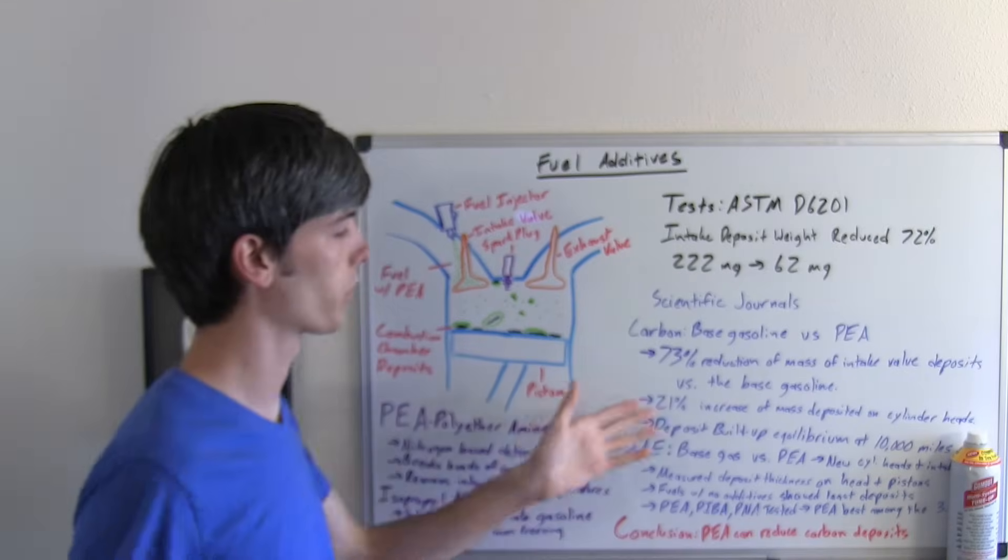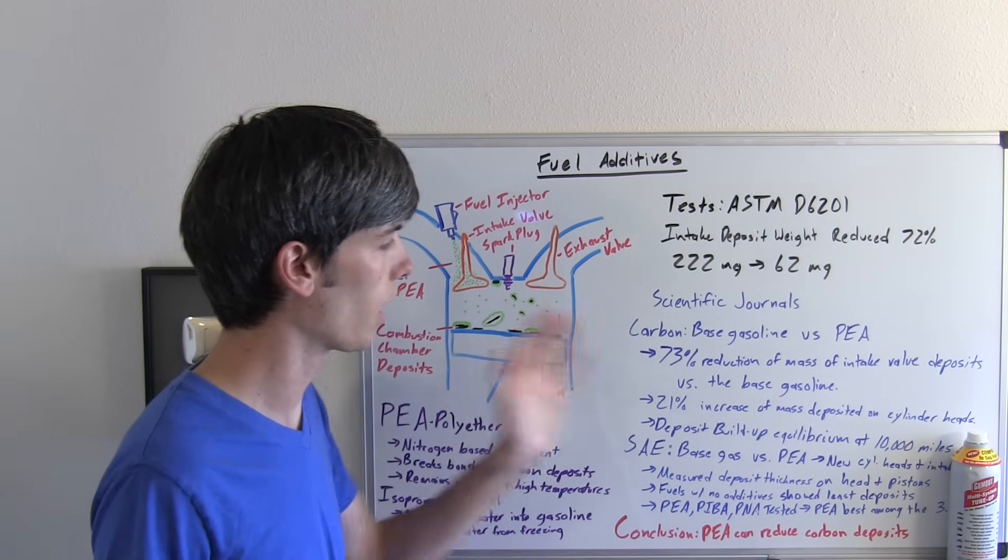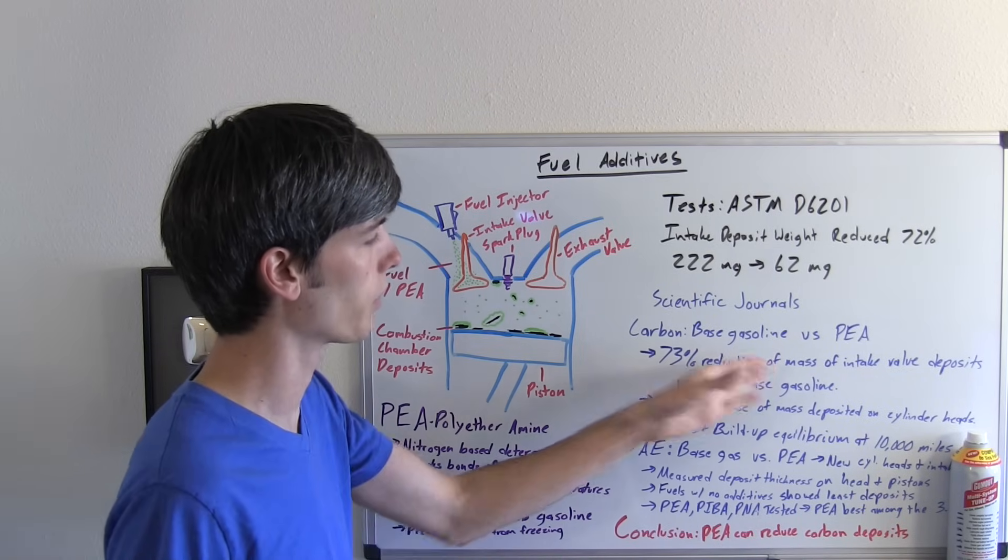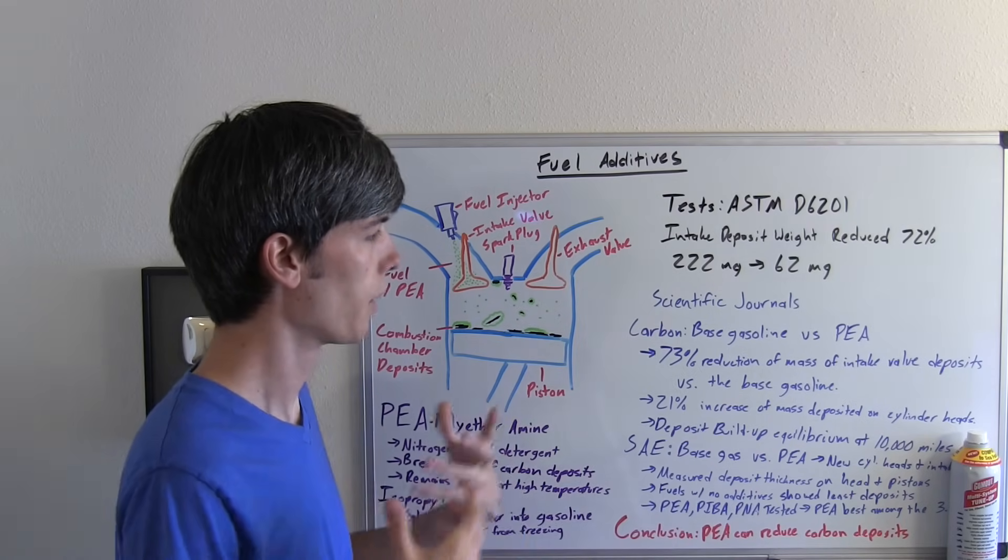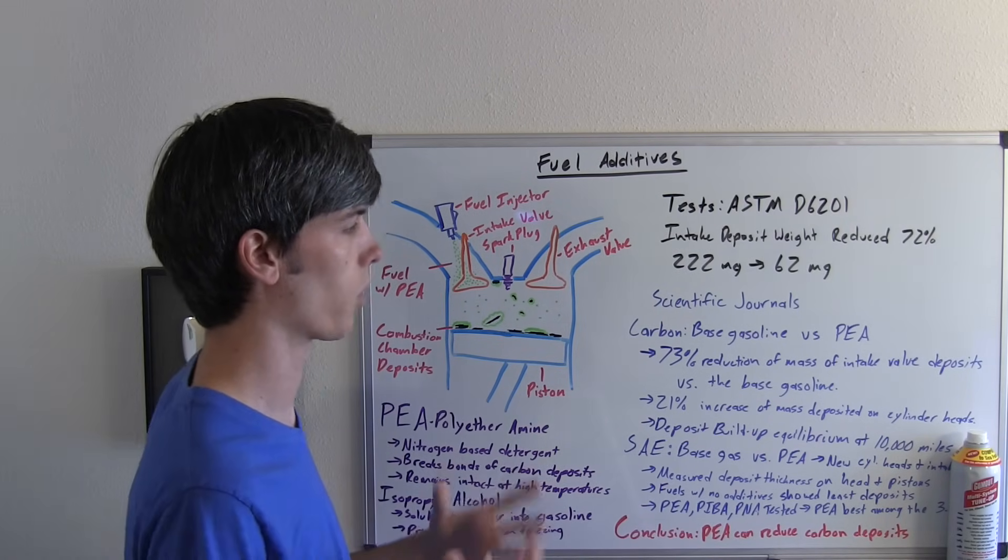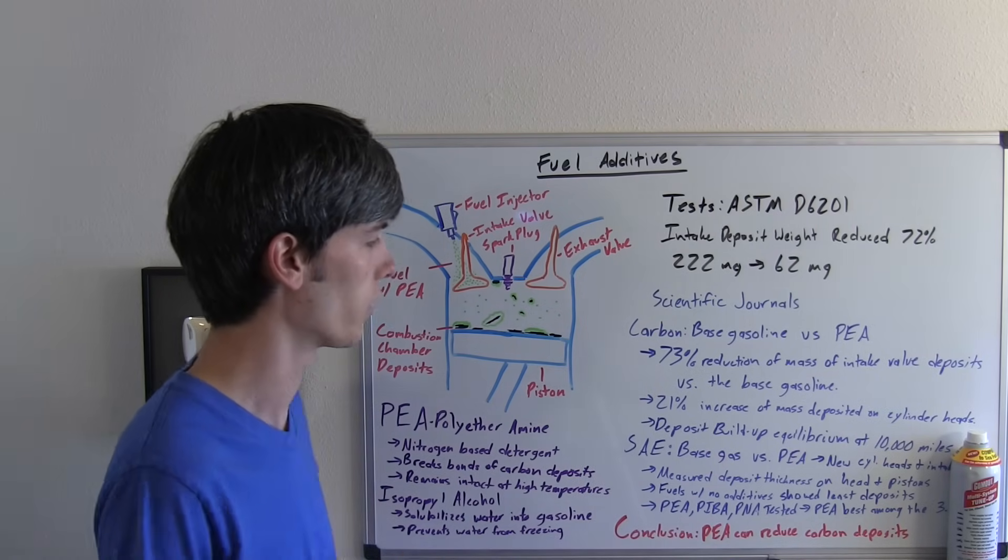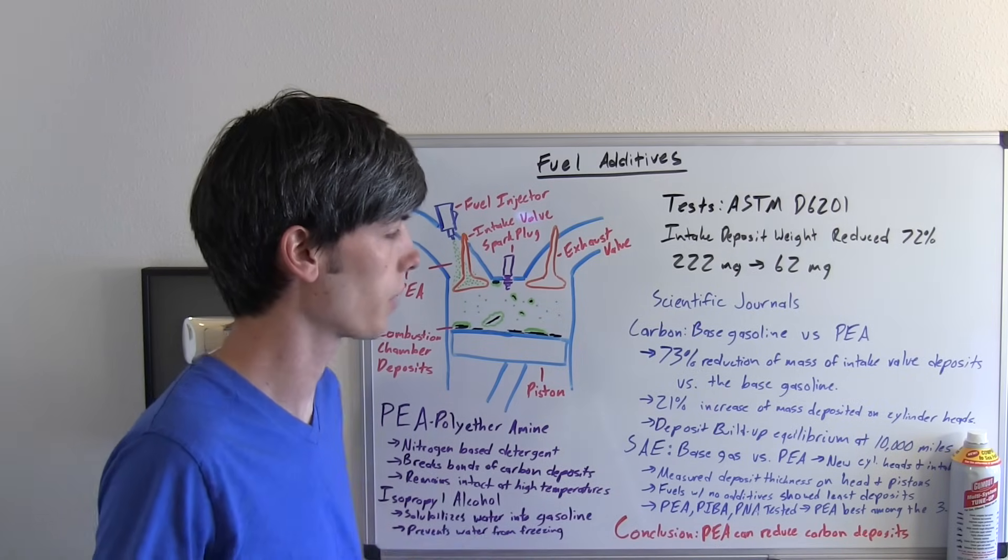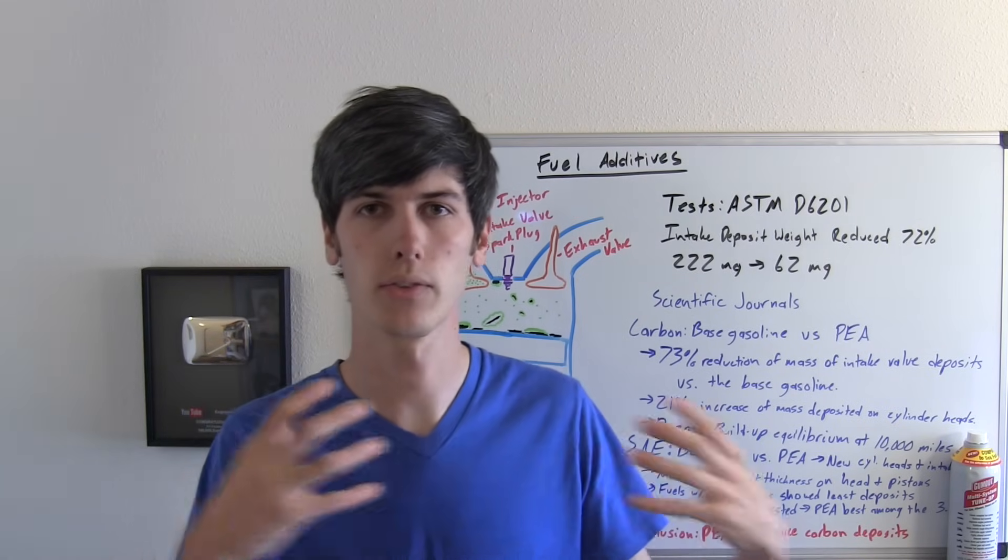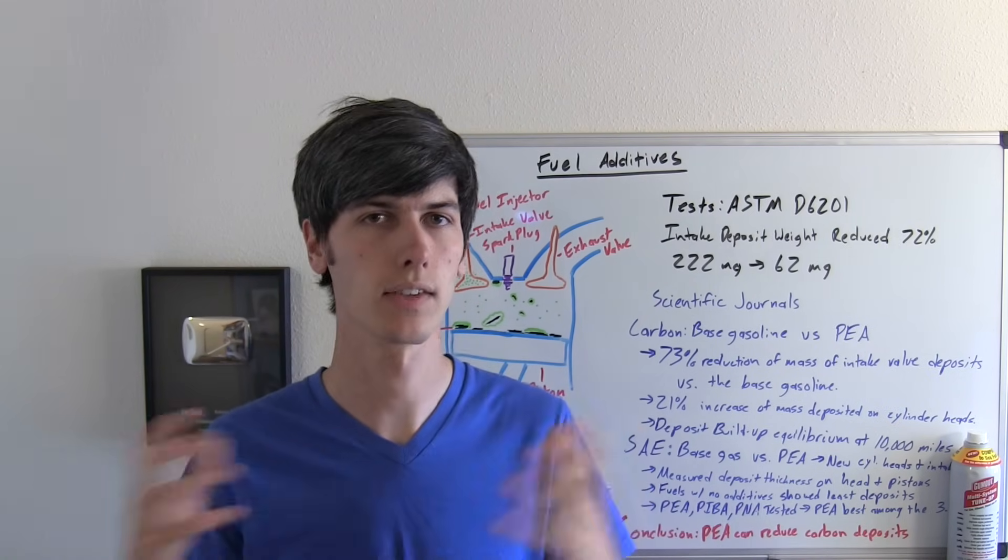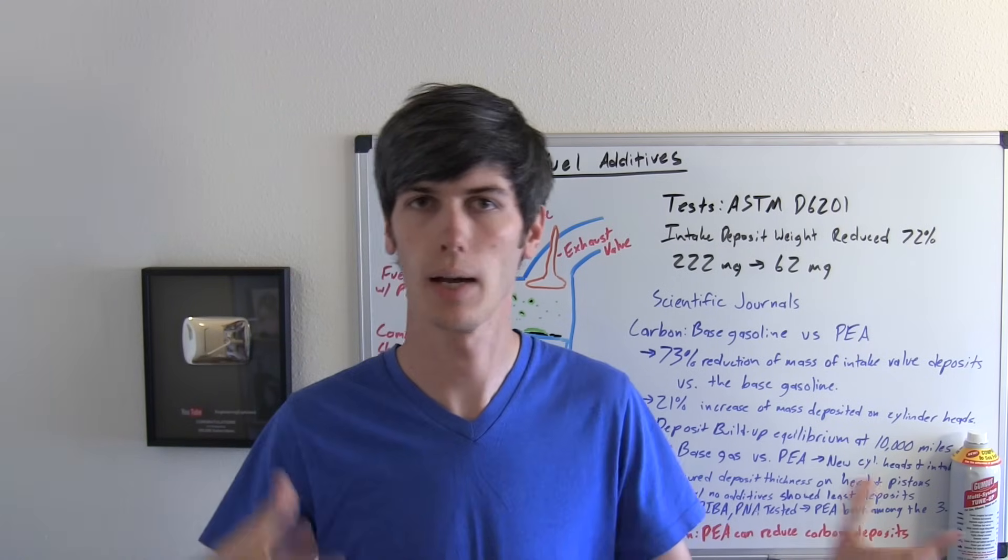What they also found was that there was a 21% increase in the mass of deposits on the cylinder heads. They didn't explain what this increase of deposits came from. It could be from the carbon from the intake valves, it could be from the PEA bonding to the cylinder heads, or it could be that with the PEA there was more deposits formed that ended up on the cylinder heads. Another interesting thing they claimed was that the deposit buildup reaches an equilibrium at about 10,000 miles. This means that the amount of deposits forming versus the amount of deposits leaving is equal at this point in time and you have a steady state of carbon buildup within the engine.